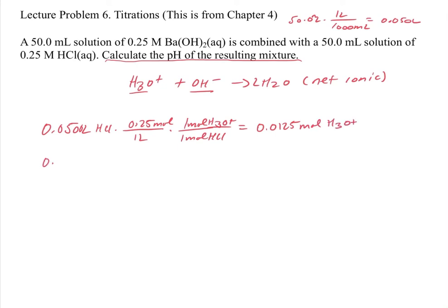For the OH- we have 0.0500 liters of barium hydroxide times its concentration which is the same. However, for every 1 mole of barium hydroxide we have to be a little careful here, there are 2 moles of OH-. So we're going to get some extra OH- relative to the HCl. Even though they have the same volumes and same concentrations, we're going to get more of the OH- because there are two OH-s in there. So we're going to get 0.0250 moles of OH-.